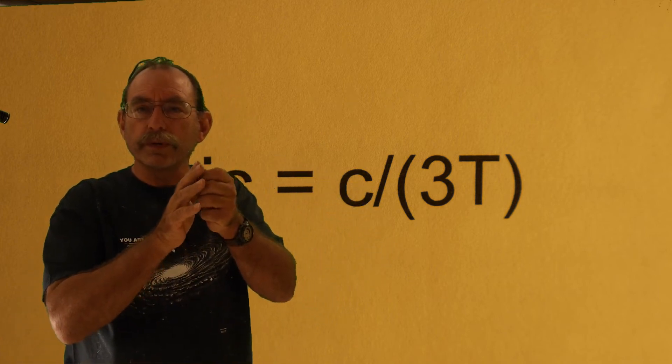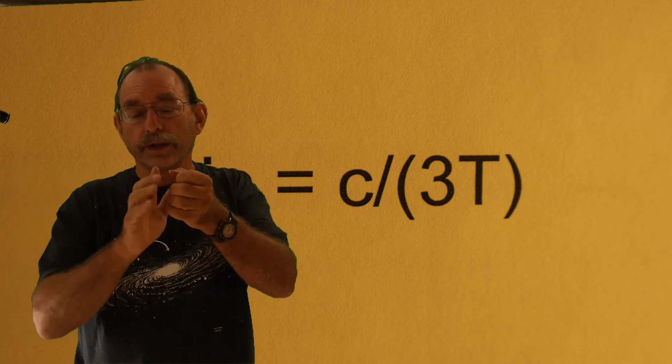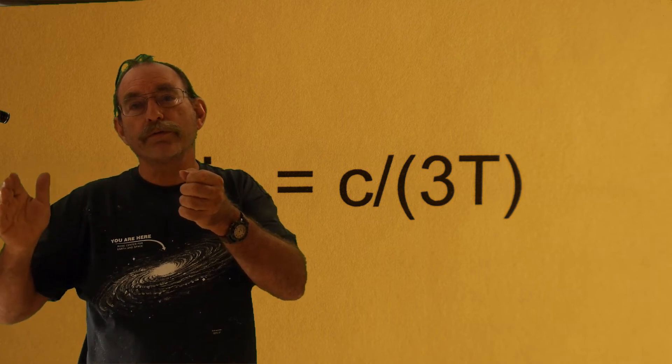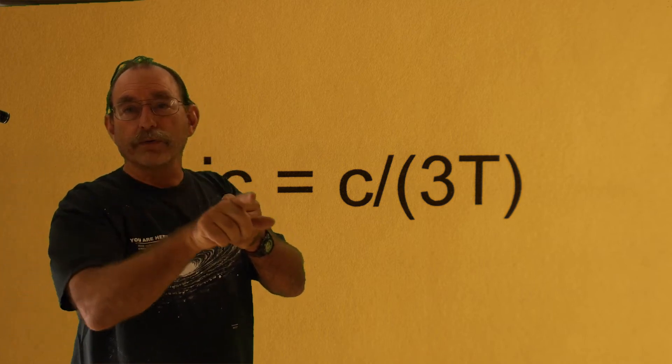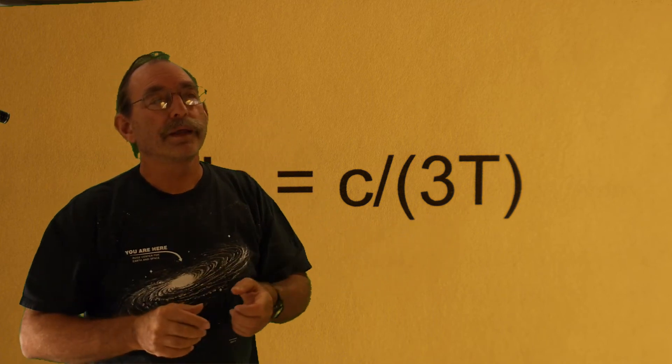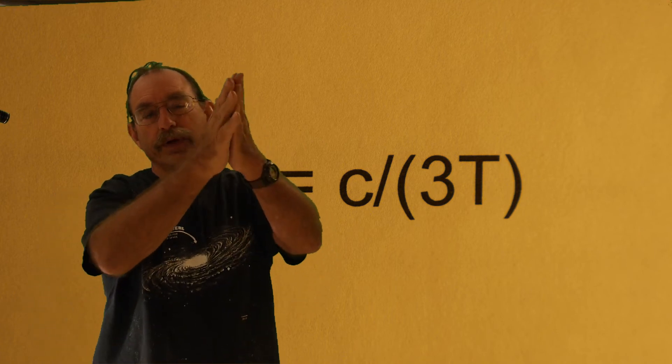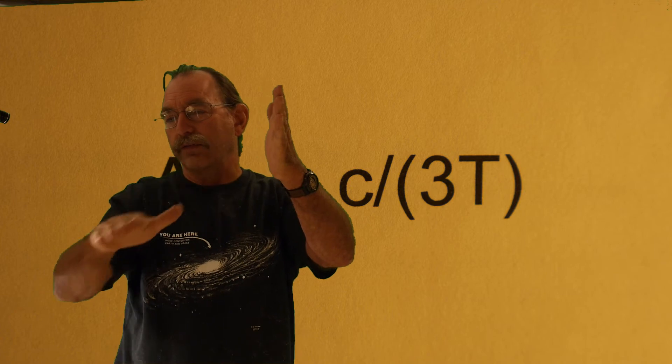For example, if we were to plot the velocity of each one of our planets going around our sun, as we keep going out further and further, the velocity was less and less. It follows a graph that diminishes and slows down. Get farther away from the sun, the velocity gets lower and lower. It follows this nice curve.